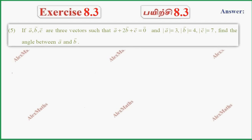Hi students, this is Alex here. Exercise 8.3, question number 5: If a, b, c are 3 vectors such that a plus 2b plus c equals 0, with magnitude of a, magnitude of b, magnitude of c being 3, 4, 7 respectively, the angle between a and b is to be found.